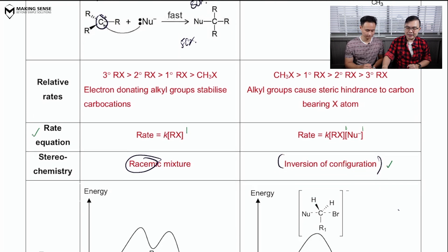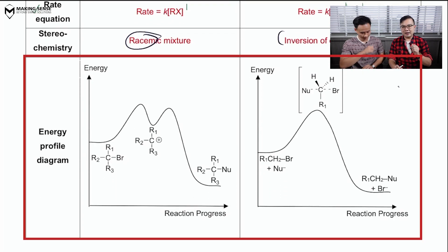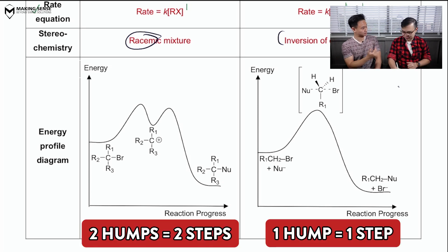Now, let me link this back into your energy profile diagram at the bottom. Important to expect is the fact that the number of humps that you see in the energy profile diagram will correspond to the number of steps. So Mr. Tim, for SN1, you see two humps because you have two steps. So there's going to be two activation energies.